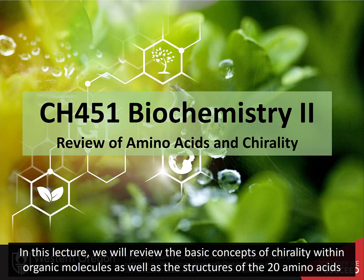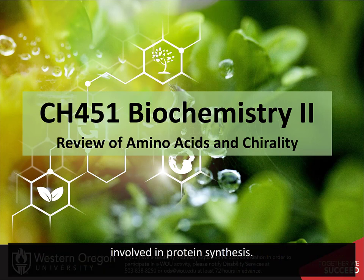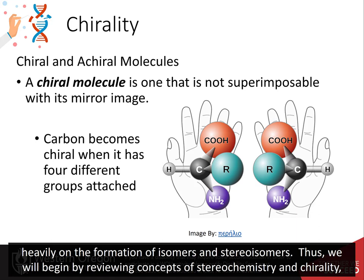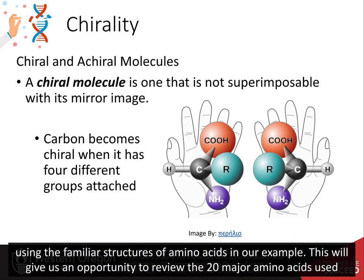In this lecture, we will review the basic concepts of chirality within organic molecules as well as the structures of the 20 amino acids that are involved in protein synthesis. Carbohydrates will be one of the first topics that we will cover during this term. The structures of this class of major macromolecules rely heavily on the formation of isomers and stereoisomers. Thus, we will begin by reviewing concepts of stereochemistry and chirality using the familiar structures of the amino acids as our example.